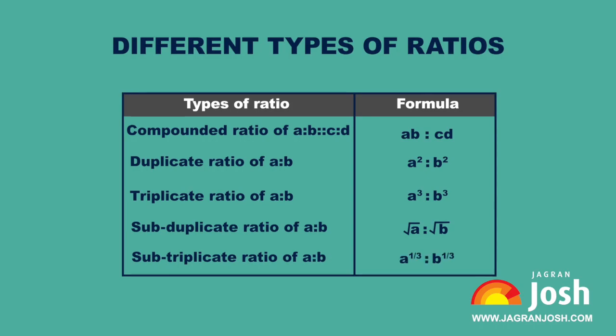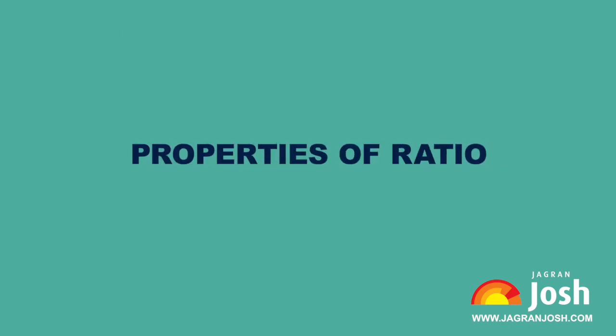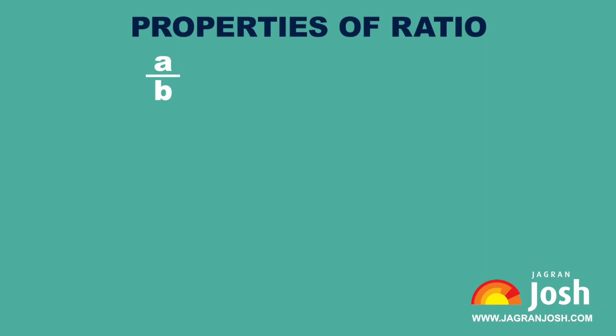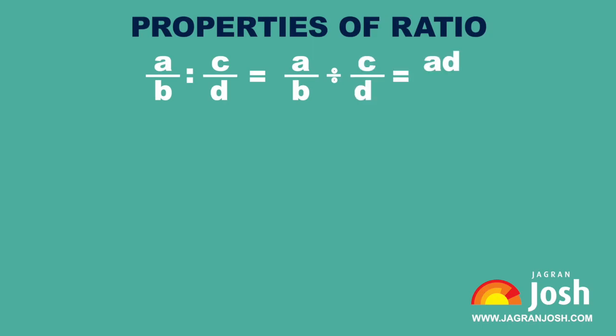Properties of ratio: if both antecedent and consequent are multiplied or divided by the same number, the ratio remains unchanged. The ratio of two fractions can be expressed as follows: A upon B is to C upon D is equal to A upon B divided by C upon D, which equals AD upon BC.